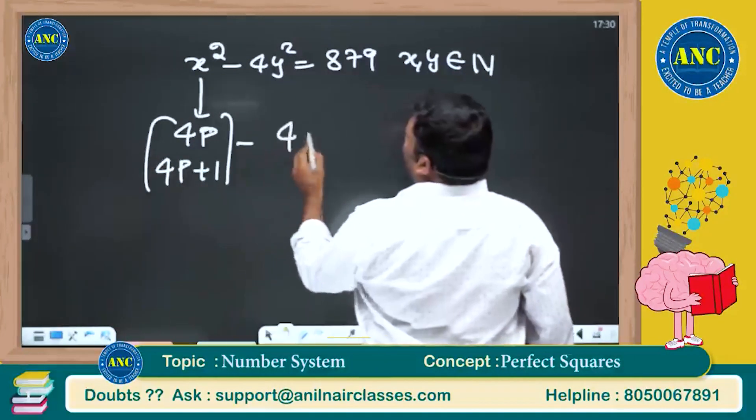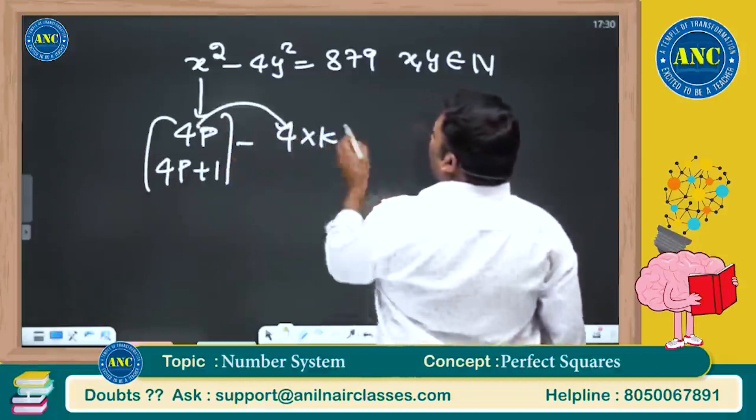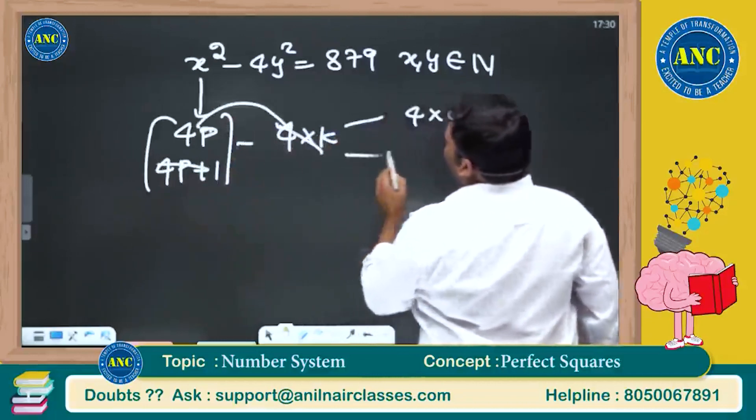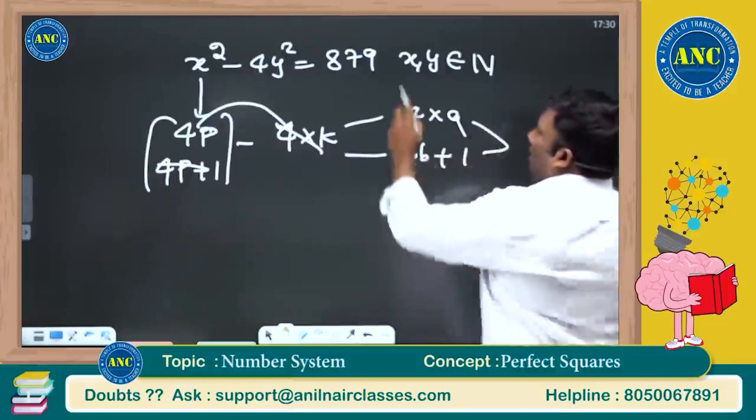Minus 4 into any number, it is 4 into k. Both are divisible by 4, answer should be divisible by 4. 4k, 4k divisible, answer should be divisible by 4 and gives a remainder 1.